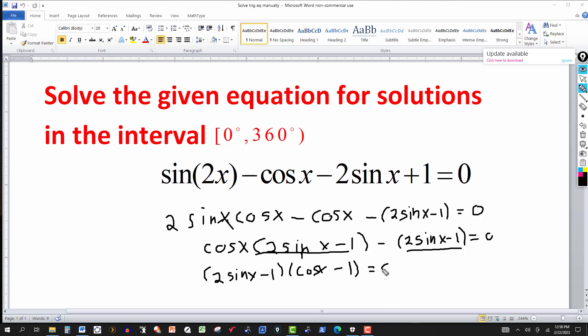Now I have the left side factored out. One factor is two sine x minus one. And the other factor is cosine of x minus one. So either this factor, or this factor, or both factors are equal to zero since the product is zero.